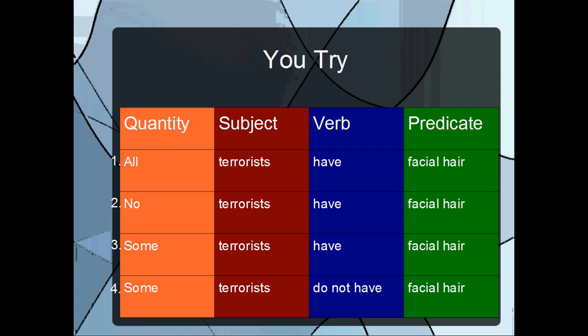For the second proposition, no terrorists have facial hair. It's entirely excluding the category terrorists from people that have facial hair. It's saying there's not a single terrorist that falls under the category who have facial hair.